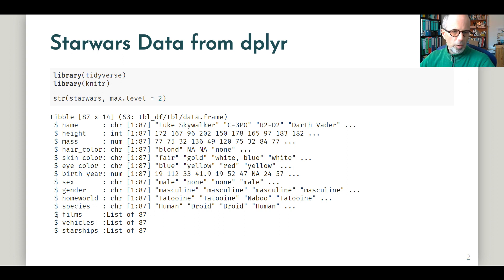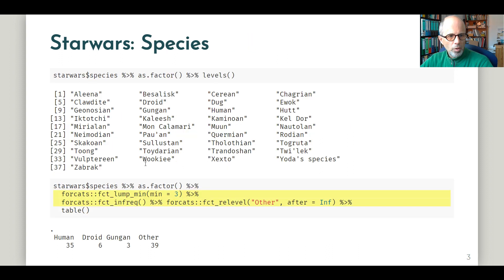Today we won't worry too much about that and we'll focus on species and names. Let's have a look which species are present in this dataset. We see we have 37 species altogether, but many of them appear only once or twice maybe. At the bottom of this slide, I'm using the forcats package, which has very convenient functions to work with factors.